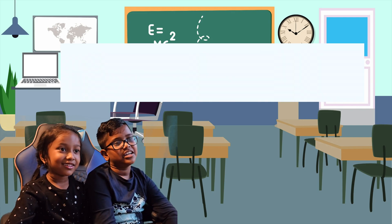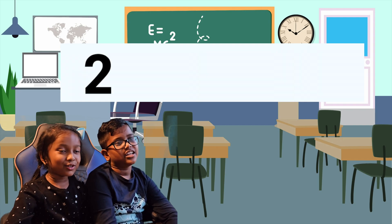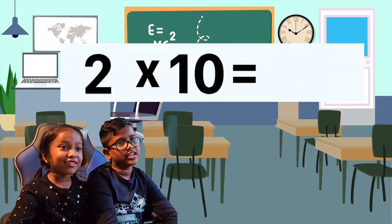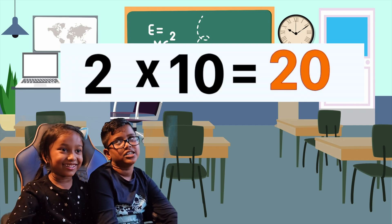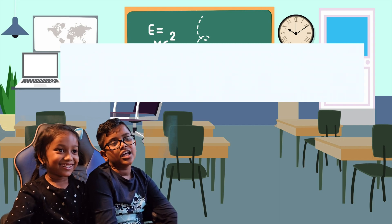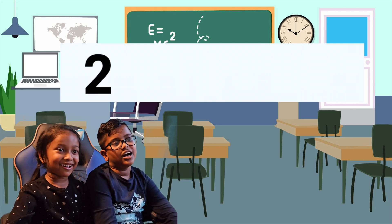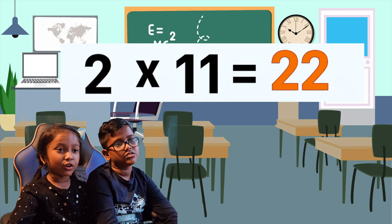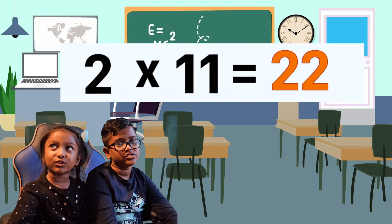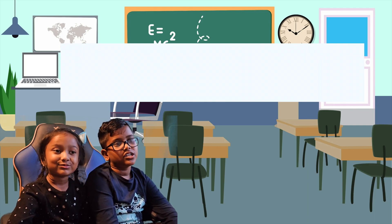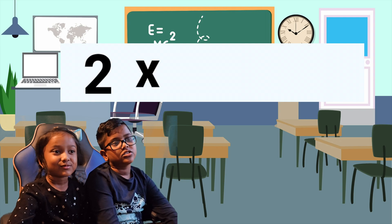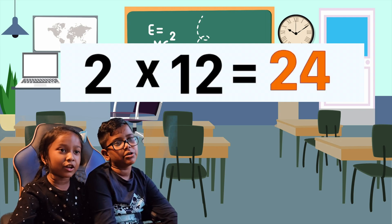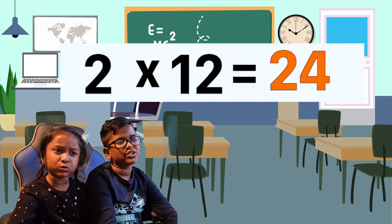2 times 10 is 20, 2 times 11 is 22, 2 times 12 is 24.